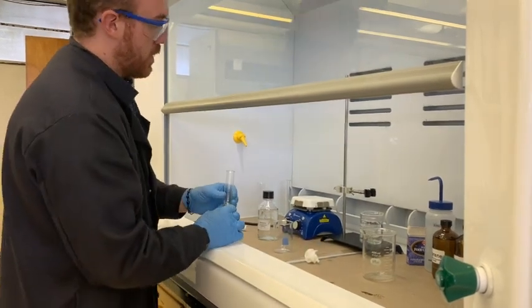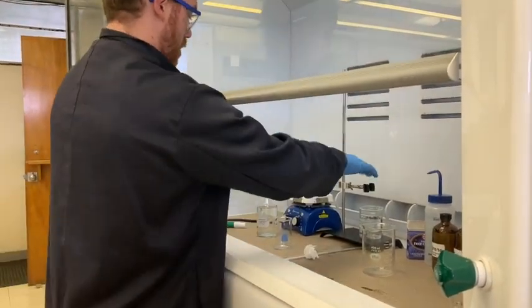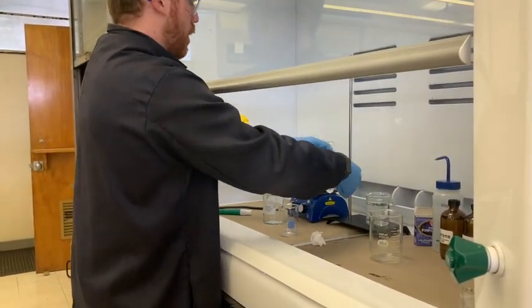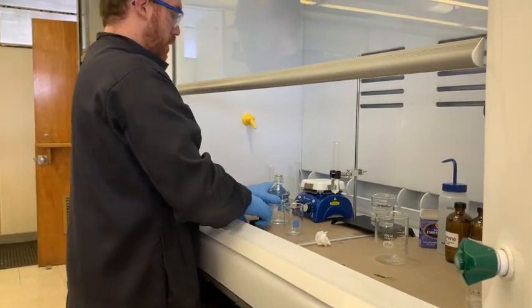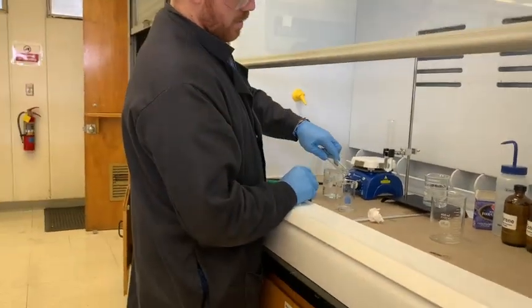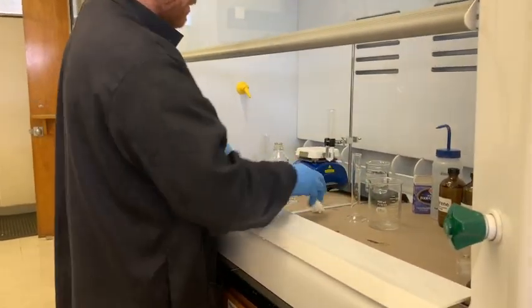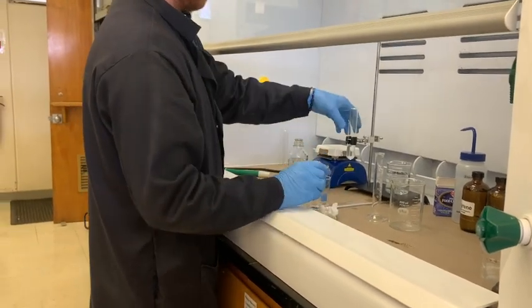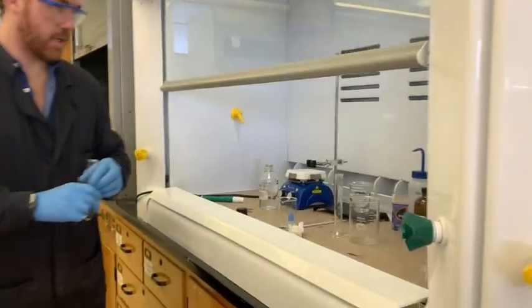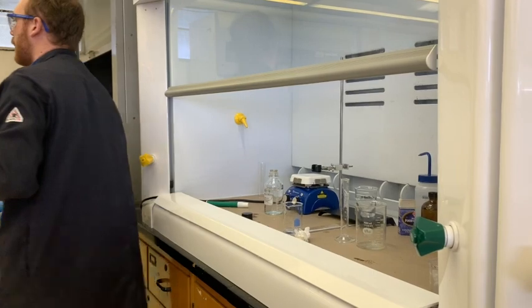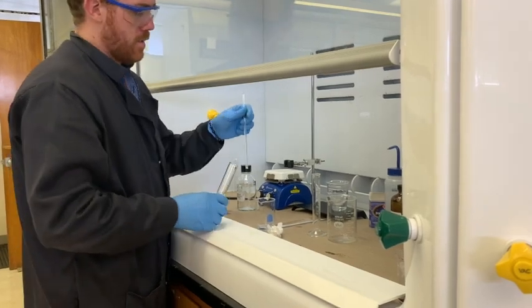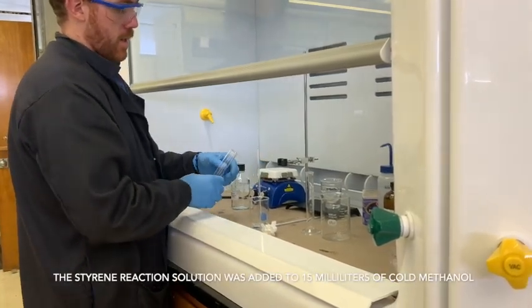And then we are going to mix that in with some methanol over here. So this methanol is slightly cooled. It's chilled from another experiment. I'm going to put 15 milliliters of that. Now we are going to try to precipitate this polystyrene out of this solution. So you want to be stirring constantly once you get going. I'm going to grab the stirring rod. I'm going to combine this. And it gets to stirring.